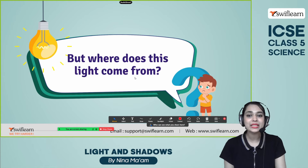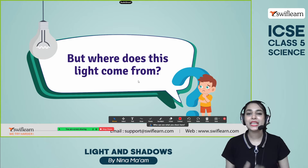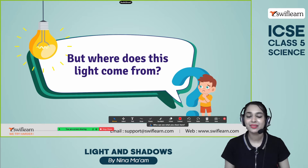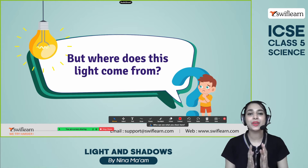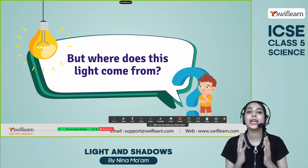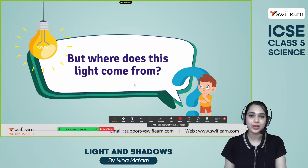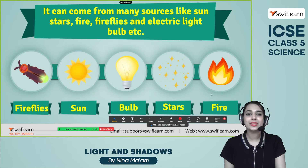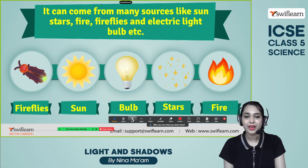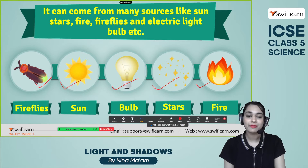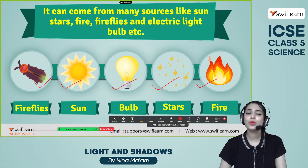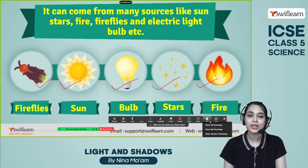But where does this light come from? Can you give some examples? During daytime, we are able to see a lot of things clearly. It's because the sun is a great source of light — it enables us to see the objects and things around us. Other sources of light include the firefly, sun, bulbs, stars, fire, electric bulbs, and candles. All these are examples of sources of light.